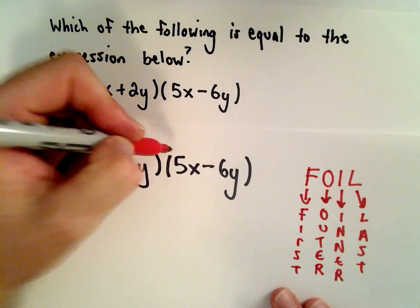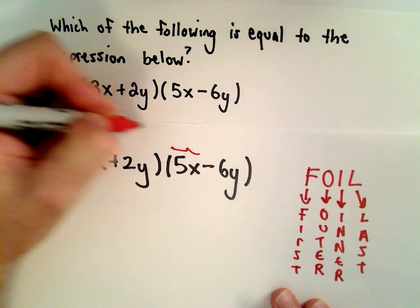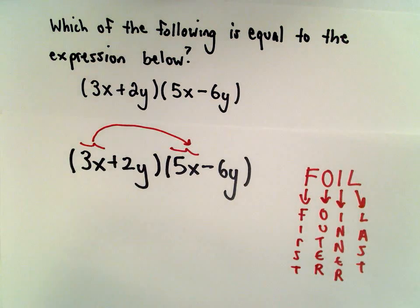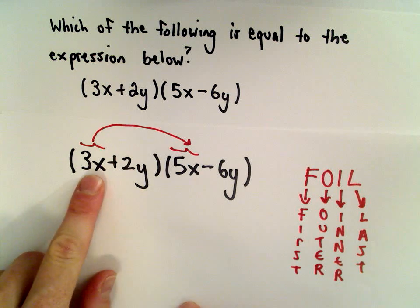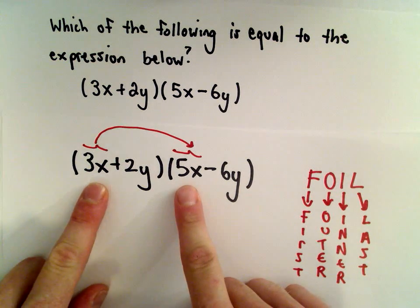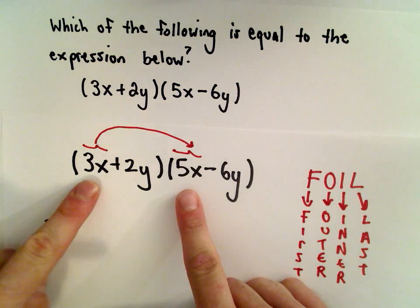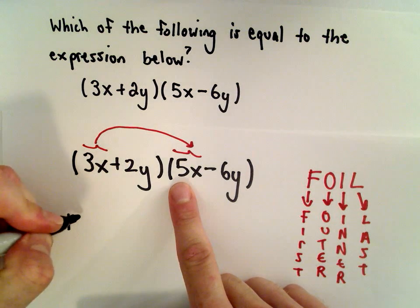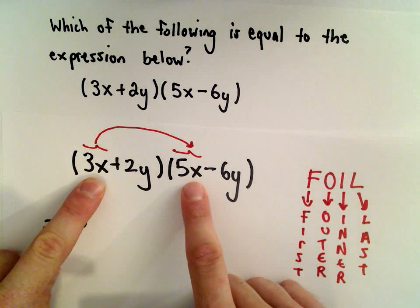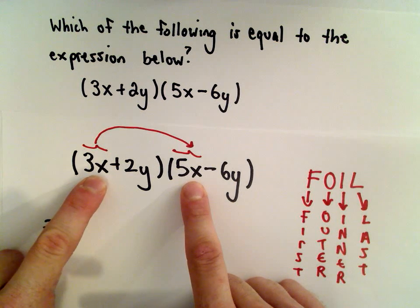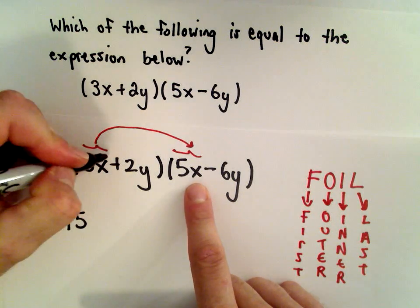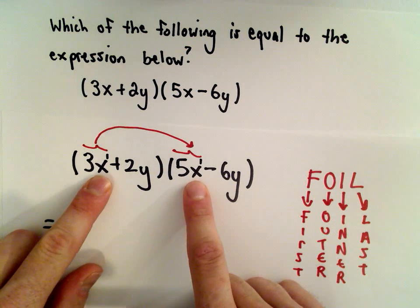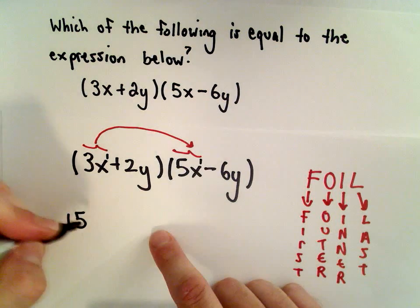First means we take the first term in each set of parentheses and multiply them together. So 3x multiplied by 5x: 3 times 5 is 15, and x times x means we add the exponents, so x to the first plus x to the first gives us 15x squared.